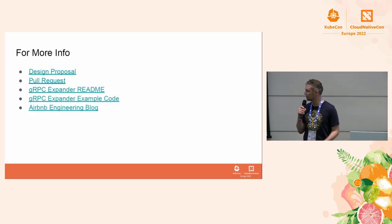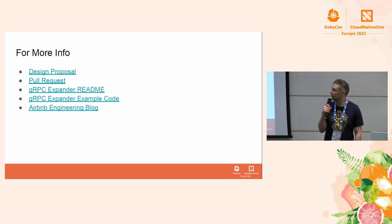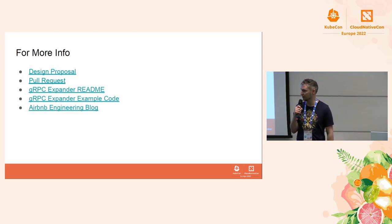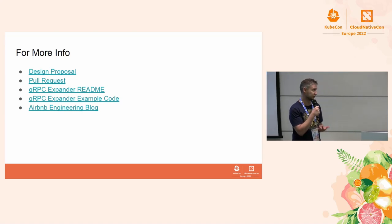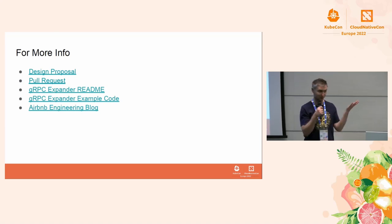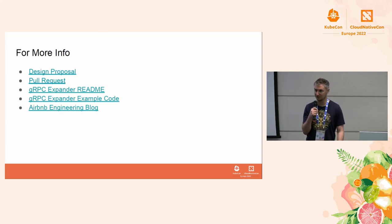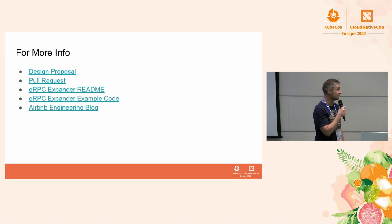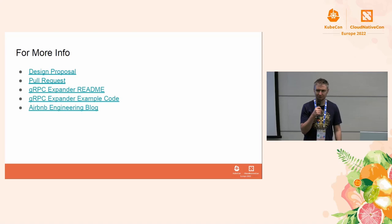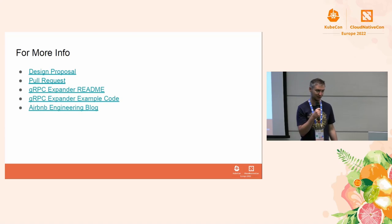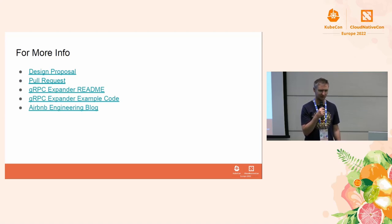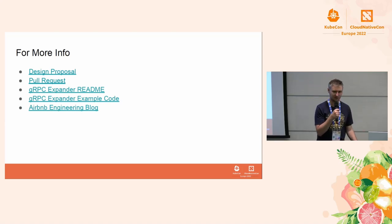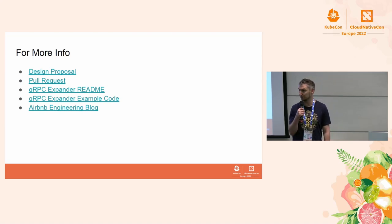You can download this from the schedule site. There's a link to the design proposal, a link to the actual pull request that got upstreamed, and inside there's a README that's a text version of what I just explained, plus some example code — a good jumping-off point if you're interested. We've also written a blog post about the expander work as well as a few other contributions we've made to cluster autoscaler. I'll update the slides once that blog post goes live — for now it's a generic link to our engineering blog.